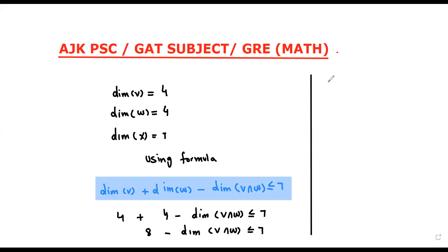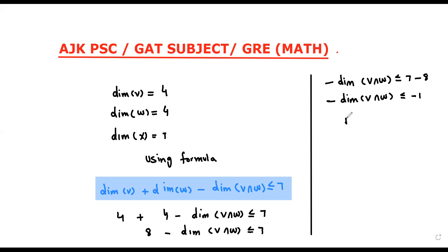Rearranging, we get dimension of V∩W is greater than or equal to eight minus seven, which gives dimension of V∩W greater than or equal to one. So the dimension must be greater than or equal to one — it can be one, two, three, four, and so on.